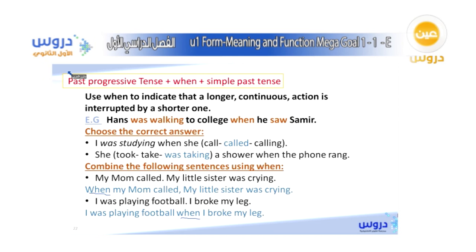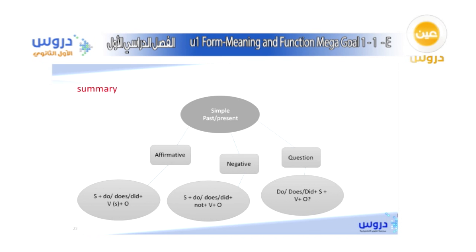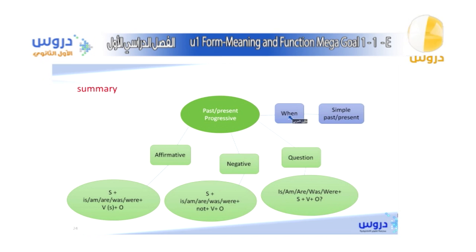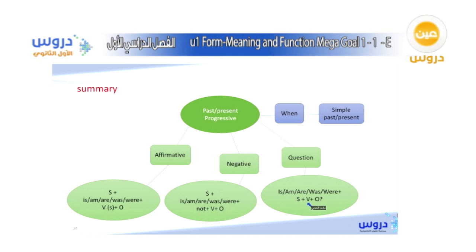Here is a summary of today's lesson. For simple past or present in affirmative, we use 'do' or 'does.' In negative, we use 'did' and add 'not' after the helping verb. For questions, we start with 'do,' 'does,' or 'did.' With past progressive using 'when,' after 'when' we use the simple past. For affirmative in progressive, the helping verbs are 'is,' 'am,' 'are,' 'was,' or 'were.' In negative, we add 'not' after the helping verb. For questions, we start with 'is,' 'am,' 'are,' 'was,' or 'were,' then the subject, verb, object, and complement.